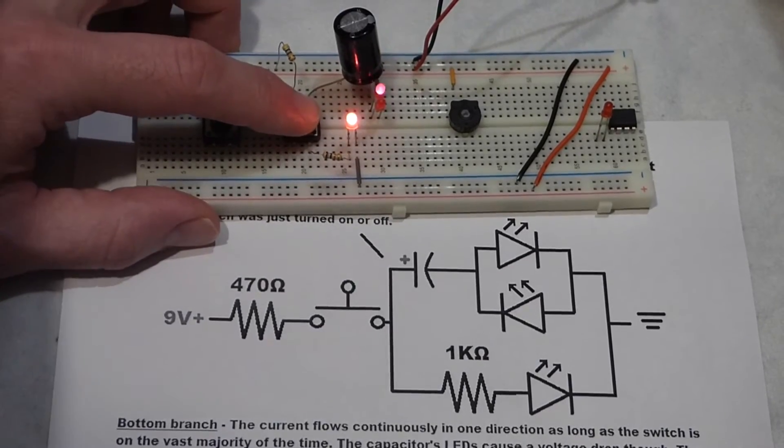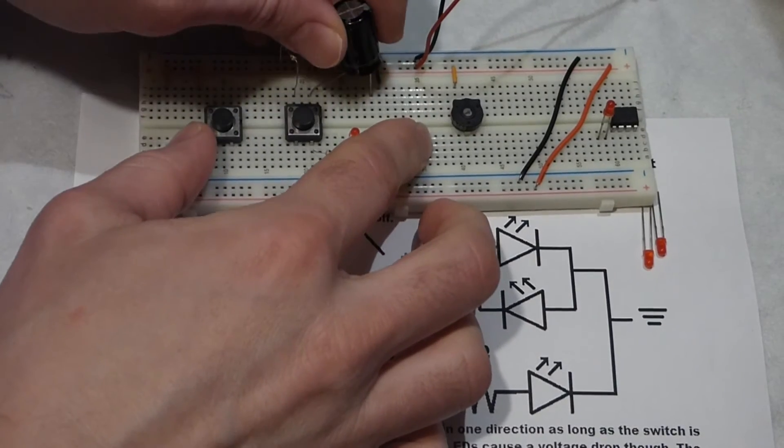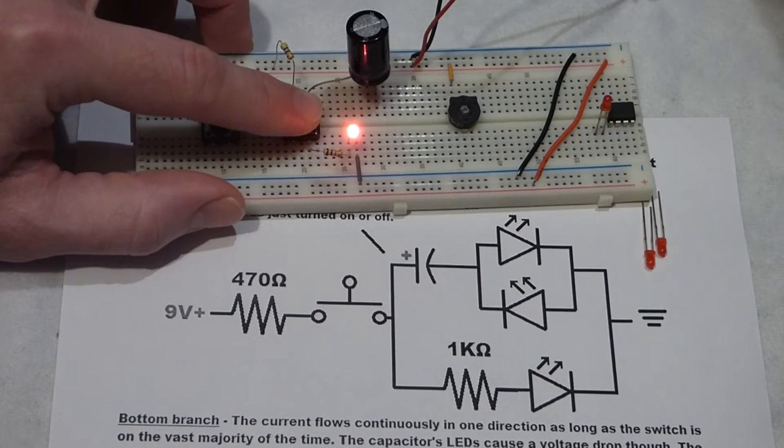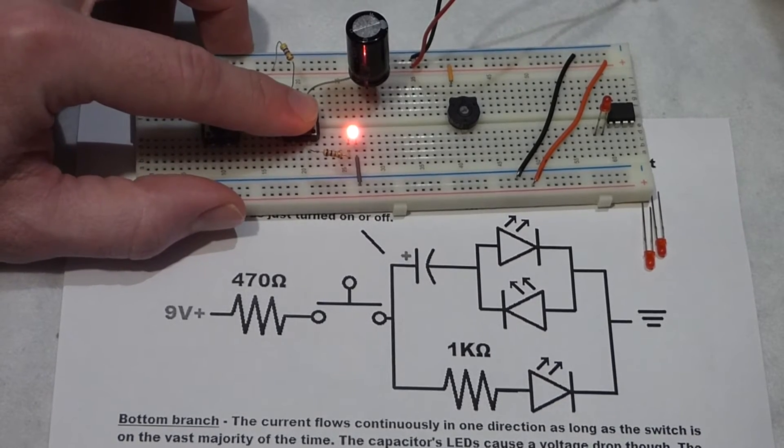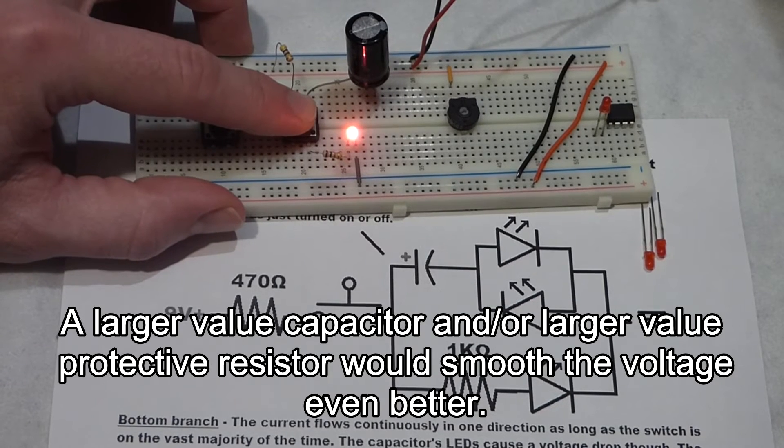To make this circuit even better, I can just remove these LEDs and put the capacitor directly to ground. Now you see, it hardly changes when I release the switch.